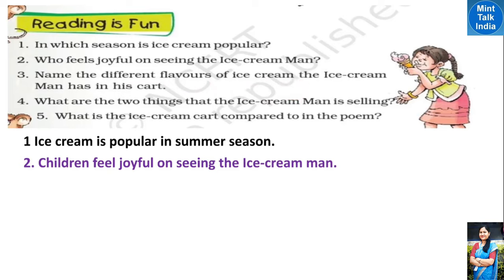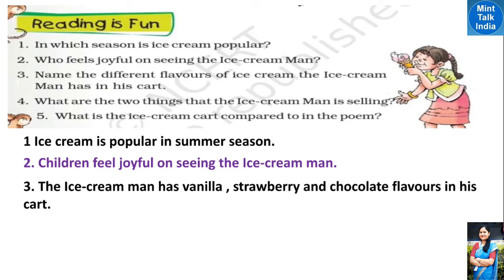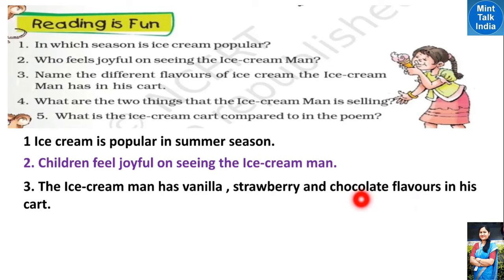Question three: Name the different flavors of ice cream the ice cream man has in his cart. (Ice cream man के गाड़ी में कौन कौन से अलग-अलग flavors के ice cream मिलते हैं?) Answer: The ice cream man has vanilla, strawberry and chocolate flavor in his cart. These three flavors are given in the poem, though he may have many more.